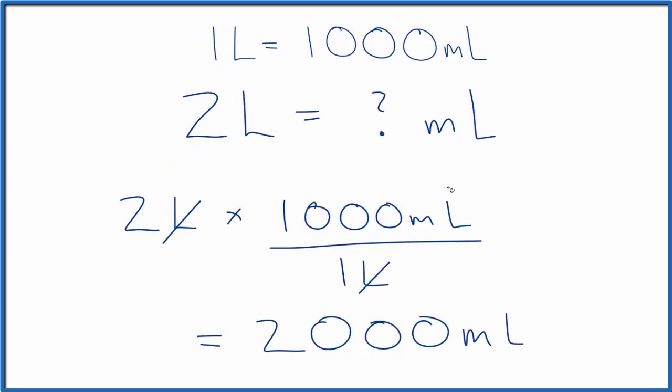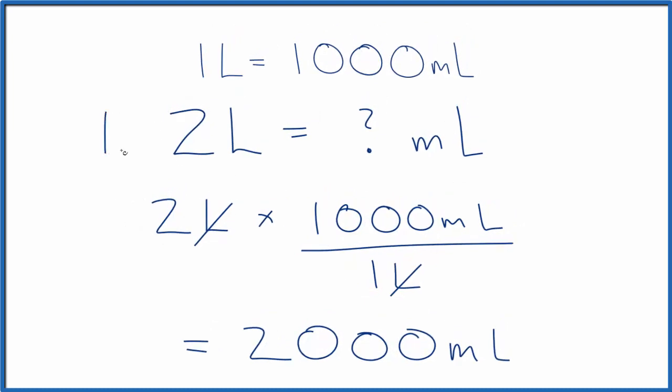And we know we did it right because we have milliliters here left when we multiplied. But what if we were given 1.12 liters? We just use the same process. We have 1.12 here, we multiply by 1,000, liters cancels out, and that gives us our answer.